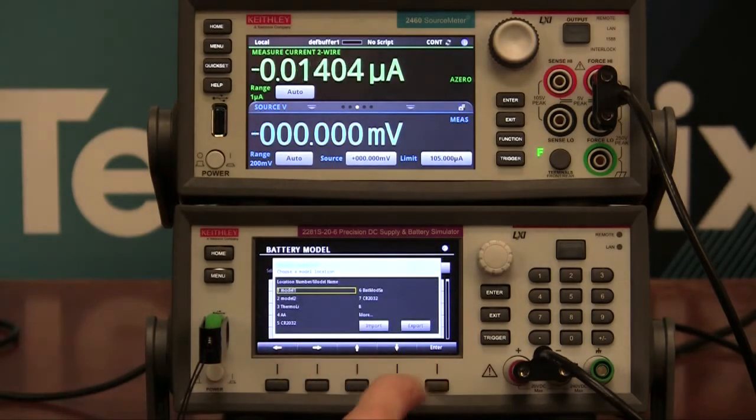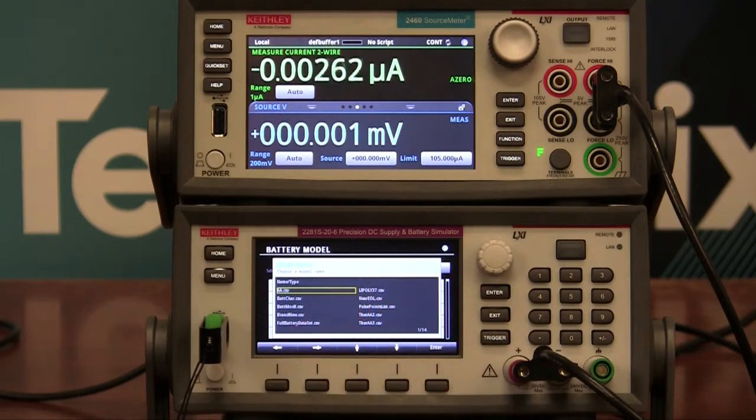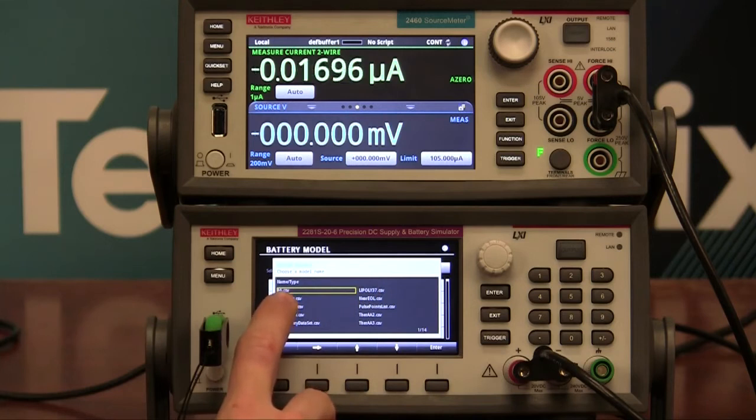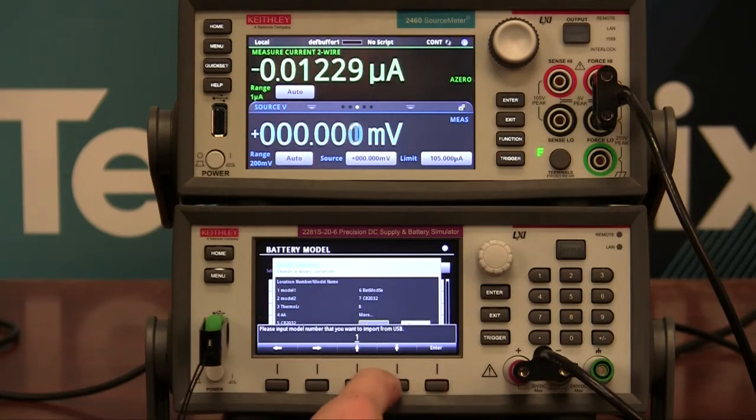Import then looks at the data on this flash drive. So I've got something called AA.CSV, which is the AA battery model. And I'm going to place it into slot number 4.